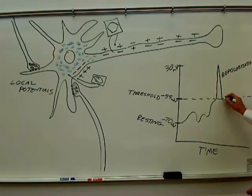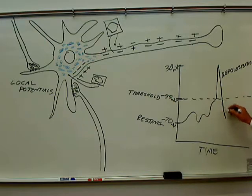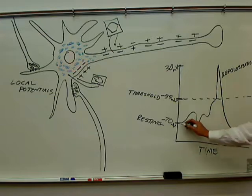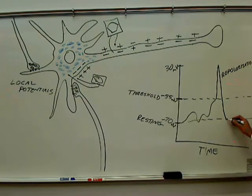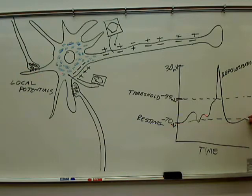After repolarization, the cell goes back down to resting potential. And it actually goes a bit more negative than resting potential. And after it goes a bit negative below resting potential, it comes back up to resting potential.